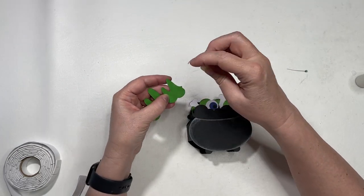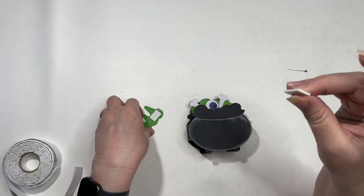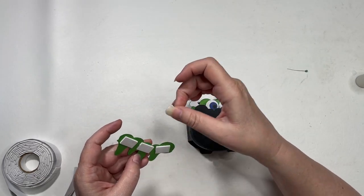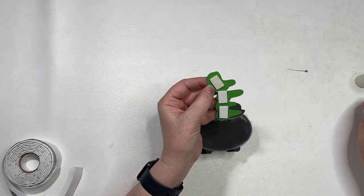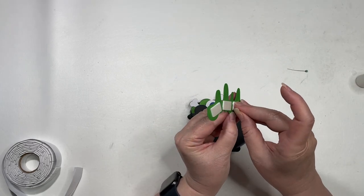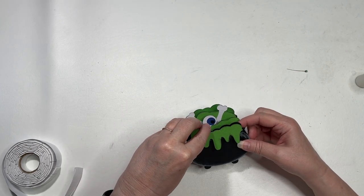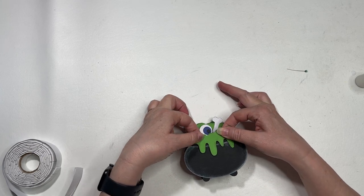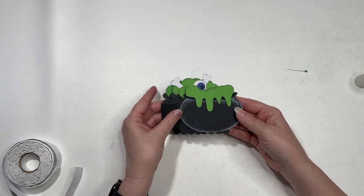So I'm just going to apply some foam squares. Got to make sure that they don't hang over. And then we're just going to line these right up. And there it is - there is the cauldron box card.